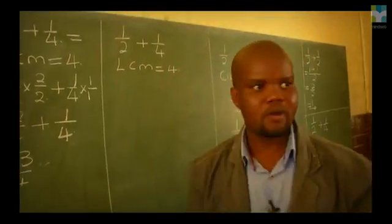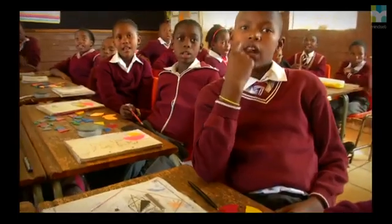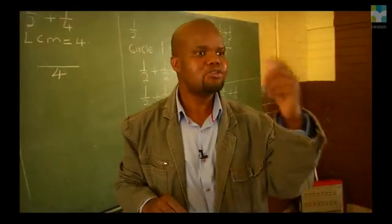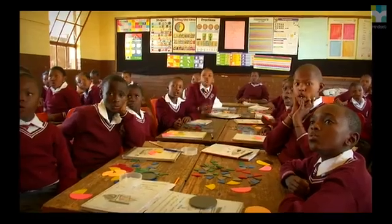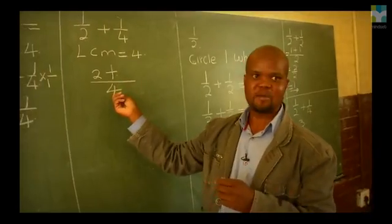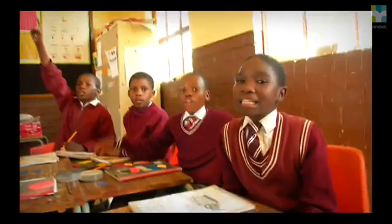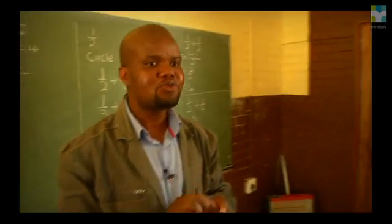Learners have got different levels of understanding, and that's why I used a different method so that learners can decide which method they feel comfortable with. Throw a line. So the LCM that you've got, you put it under the line. In this method we're going to divide and multiply. Two into four goes two times — multiply that by one, the answer is two. Write it on top of the line. Four into four goes one time — multiply that by the numerator, which is one, giving us one. Our answer is three quarters. We have used different methods but our answer is the same. It's up to you — you decide which method is okay.